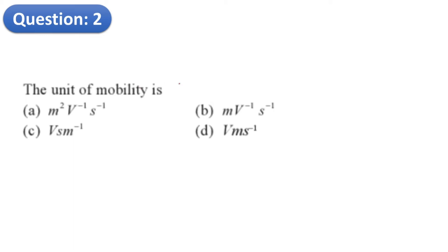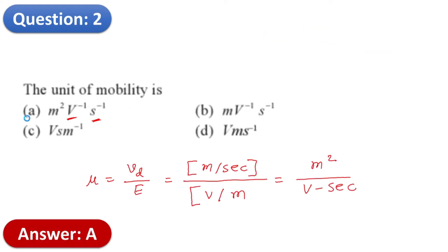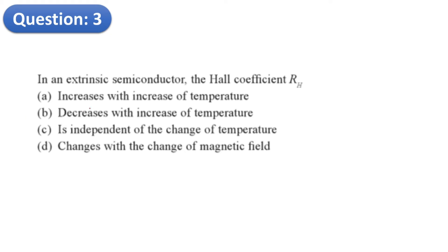Question 2 asks for the unit of mobility. Mobility mu equals drift velocity Vd divided by electric field intensity E. The unit of drift velocity is meter per second, and the unit of electric field intensity is volt per meter. Therefore the unit of mobility is meter squared per volt-second, which can be written as m² V⁻¹ S⁻¹. The correct answer is A.